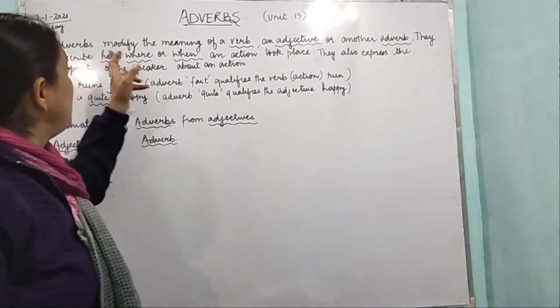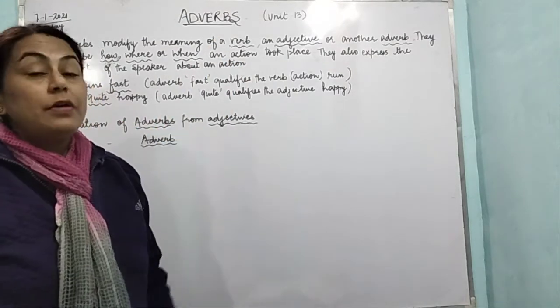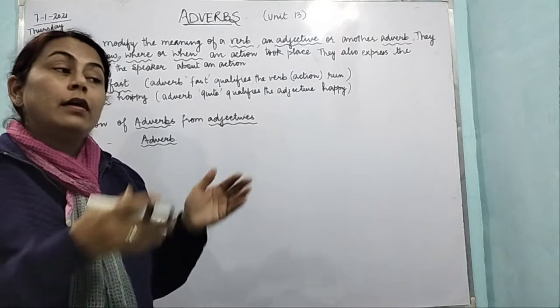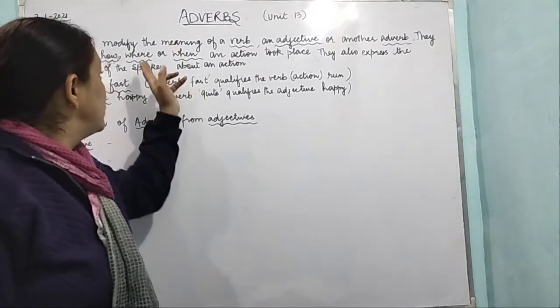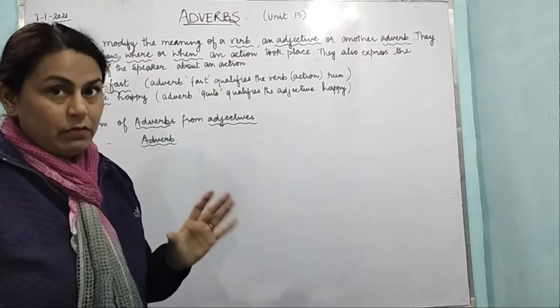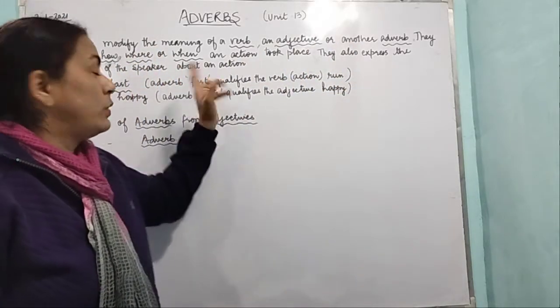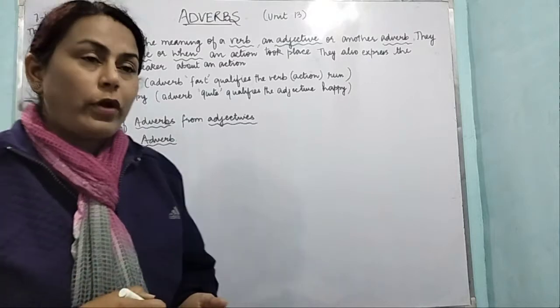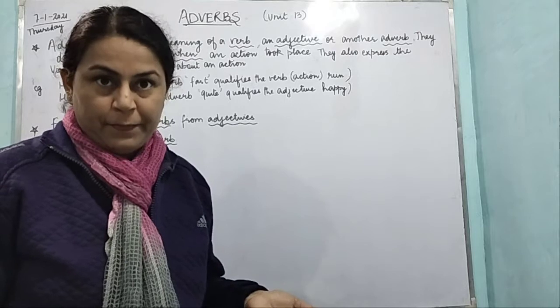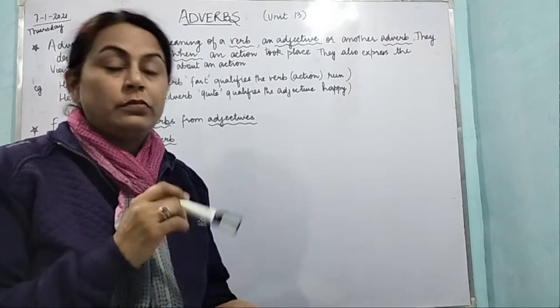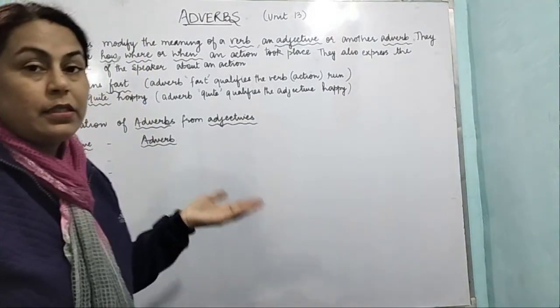They describe how, where, and when an action took place. So mostly the adverbs tell us how the action is taken place, where, and when. These three mainly are the main adverbs. They also express the viewpoint of the speaker about an action. They tell us about the viewpoint, means the speaker's views, the speaker's opinion. That is also denoted by the adverb.